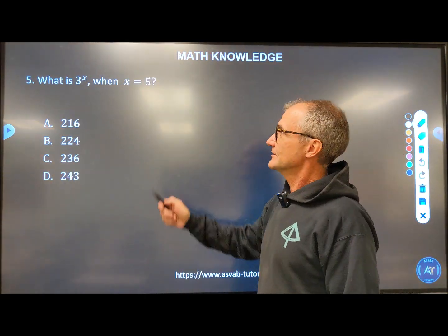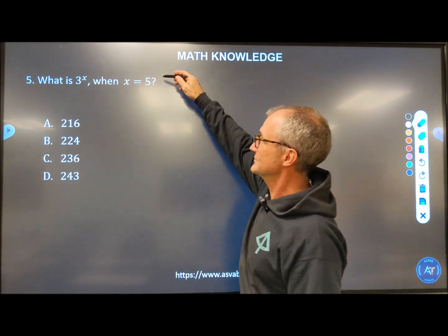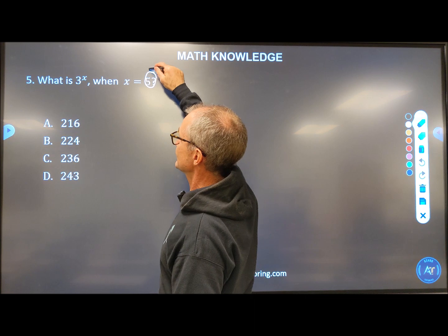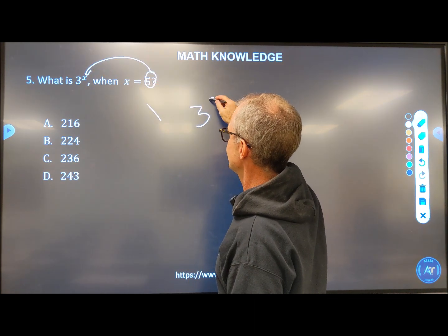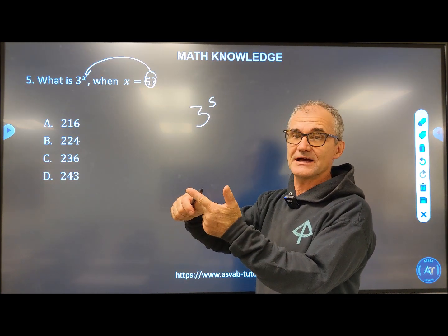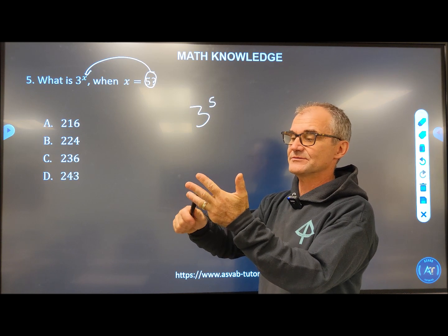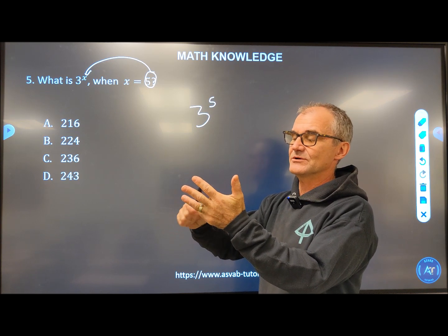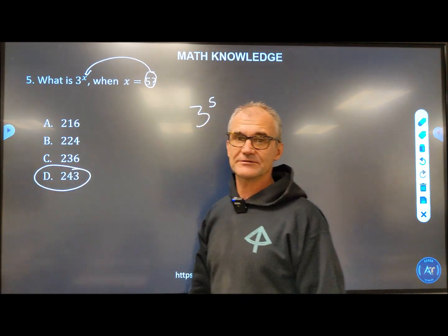Number five, what is three to the X when X equals five? Again, this is actually an exponential function, but we're evaluating by taking that value of X and plugging it in there. That gives me three to the fifth. Easier with my fingers. Three times three, nine times three, 27, 27 times three, 81, 81 times three, 243. So three to the fifth is 243.